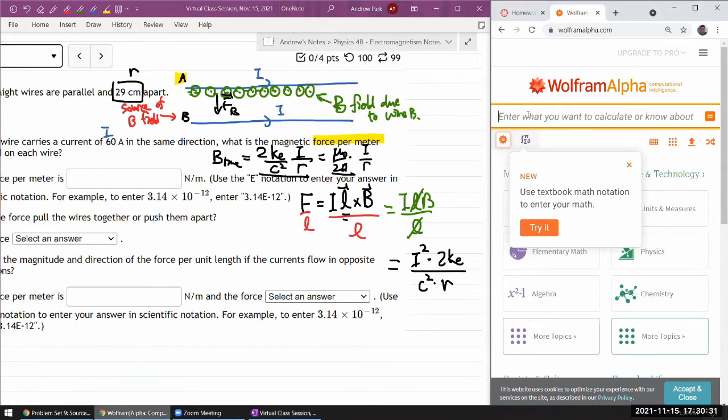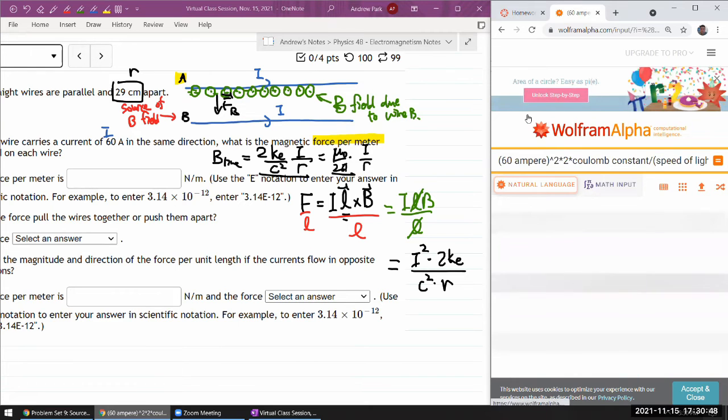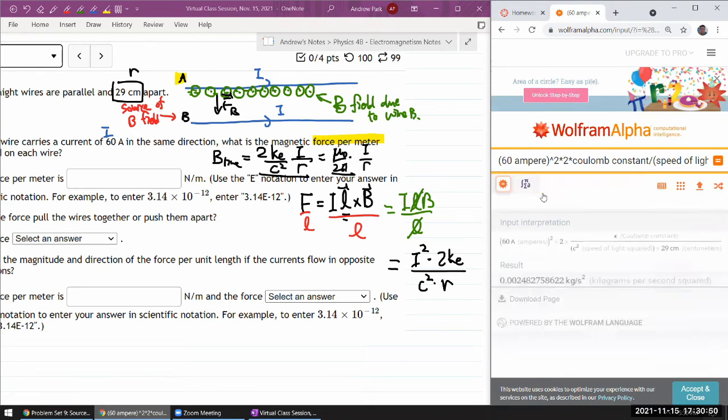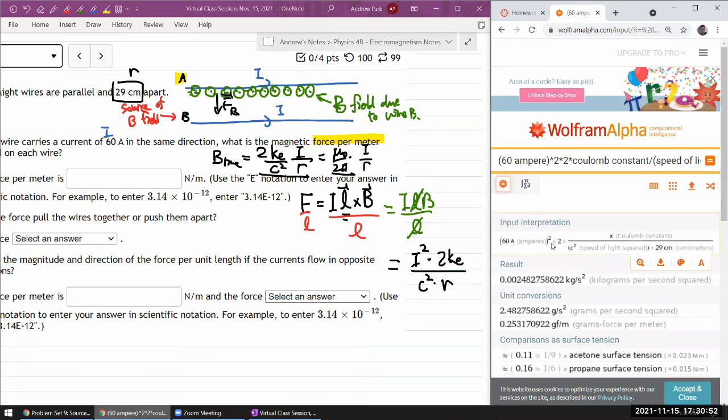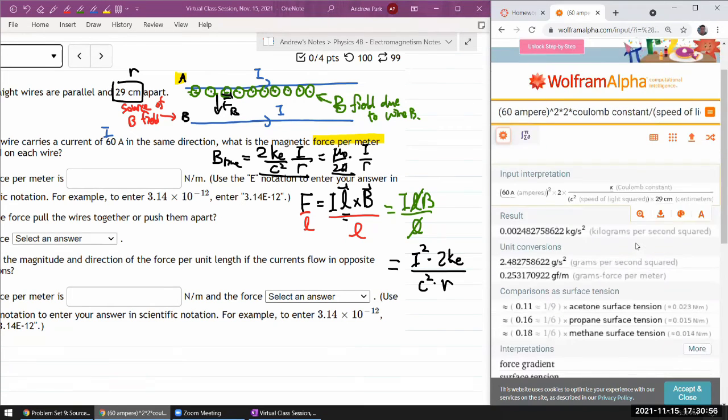So just make it so that I can see everything here. The current 60 ampere squared times 2 times Coulomb constant divided by speed of light squared times the distance 29 centimeters. Hopefully it'll interpret that input correctly. Current squared, 2 Coulomb constant, c squared. Okay that looks right.